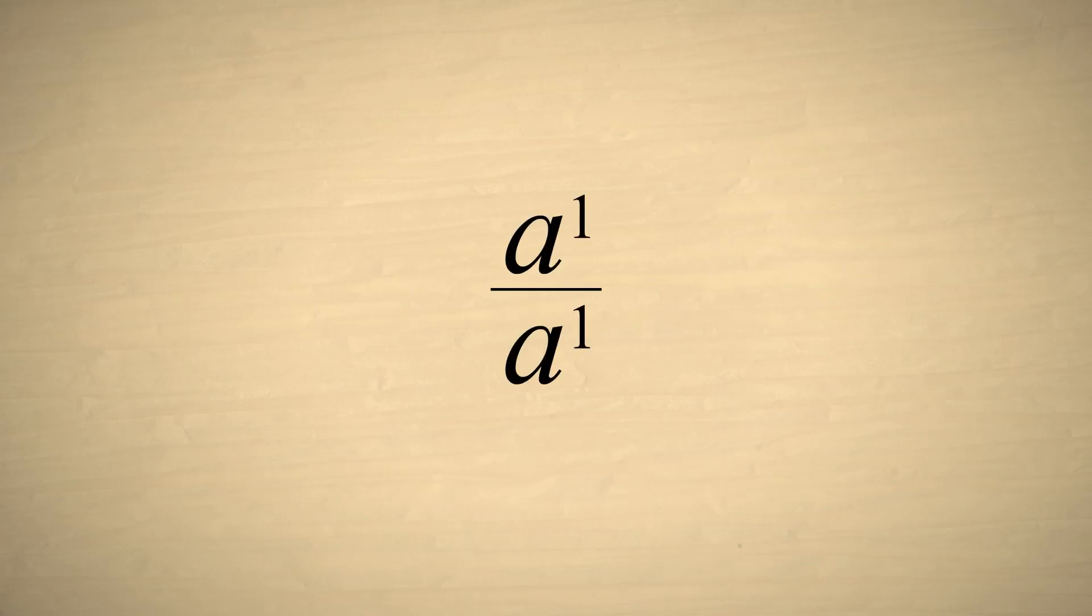To find out what an exponent of zero would mean, let's divide a to the first power by itself. Subtracting the exponents, we get a with an exponent of zero. Of course, any fraction where the numerator and denominator are the same is equal to one. So we see that any number with a zero exponent is equal to one.